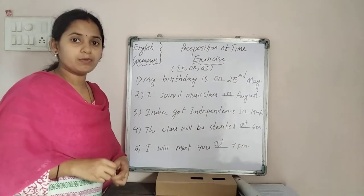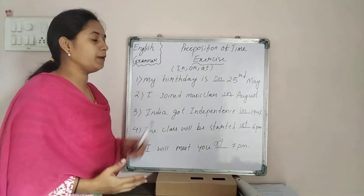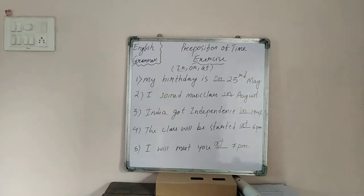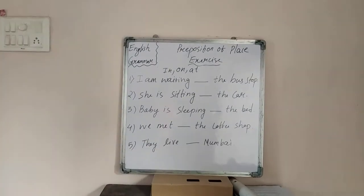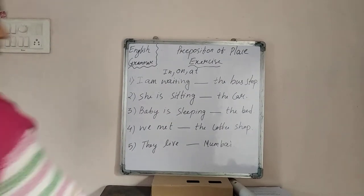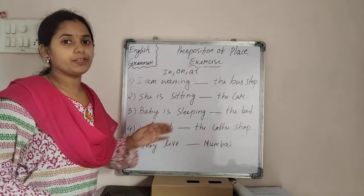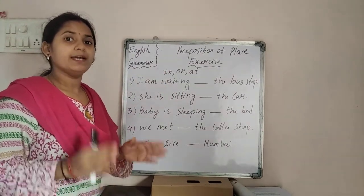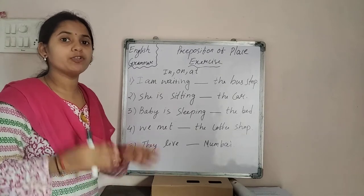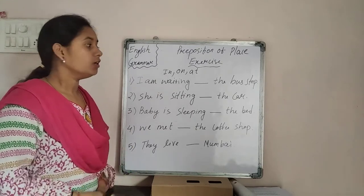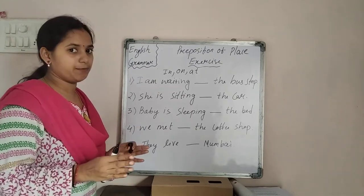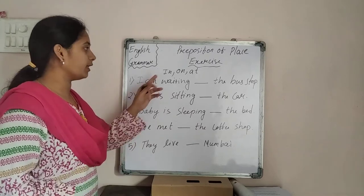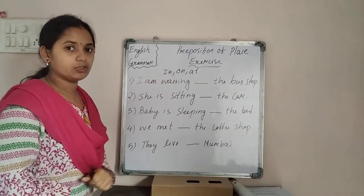Now moving to the next step — prepositions of place. This gives information about the place of the event. The basic prepositions of place are also in, on, and at.